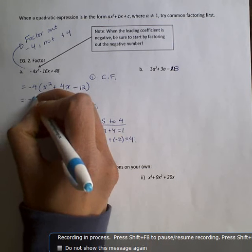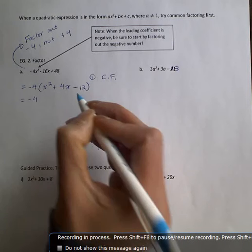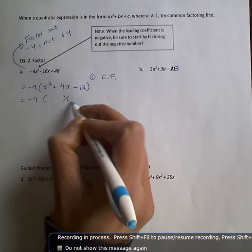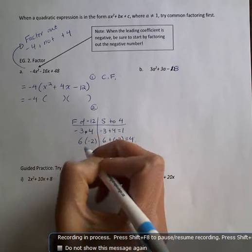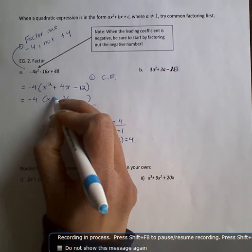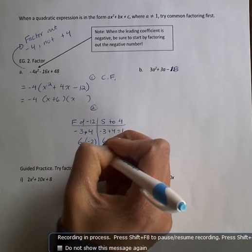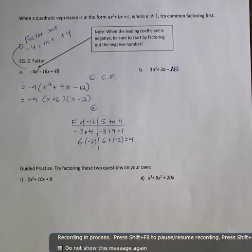So I want to rewrite that negative 4. It's really important that we don't forget to do that. I'm going to draw my two brackets. And I'm going to write this down in the factored form. So it's going to be x plus 6 and then x minus 2. And that's factored.